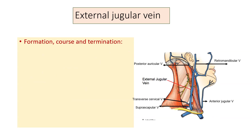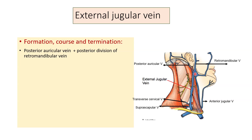Coming to the formation of the external jugular vein: it is formed by the union of the posterior auricular vein and the posterior division of the retromandibular vein. The retromandibular vein is formed within the substance of the parotid gland by the union of the superficial temporal and maxillary veins, and it divides into an anterior and a posterior division. The posterior division joins the posterior auricular vein just behind the angle of the mandible to form the external jugular vein.